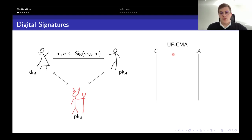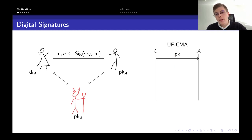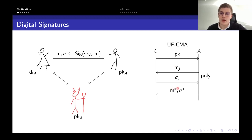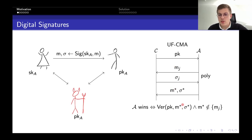In this game, the adversary first gets a public key PK, and then can ask for signatures for arbitrary messages of its choice. In the end, the adversary outputs a message-signature pair M-star, Sigma-star. He wins this game if this is a valid message-signature pair and the message is fresh — meaning he never learned a signature for that message.